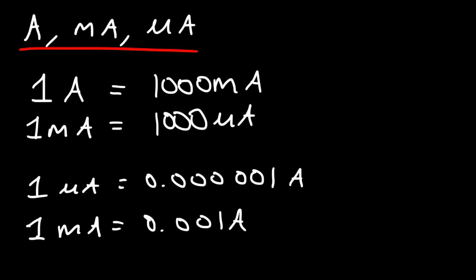The milliamp is pretty small, but the microamp is very, very small — it's a tiny amount of current. You need to be familiar with these when dealing with a circuit. An amp is a relatively large amount of current, a milliamp is pretty small, and a microamp is very, very small.